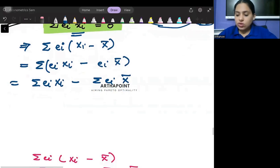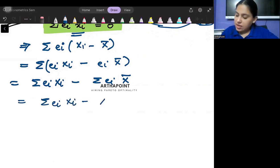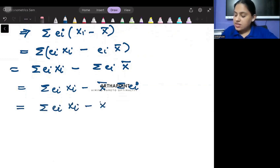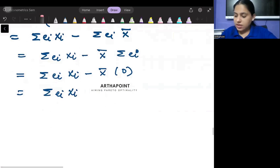Now try to notice that X̄ is a constant, and I've always told you constants come out of summation. So we can write this as ∑ei*Xi - X̄∑ei. We already proved in the last video that the sum of the error term is assumed to be 0. So this becomes ∑ei*Xi - X̄*0. So this will be ∑ei*Xi.